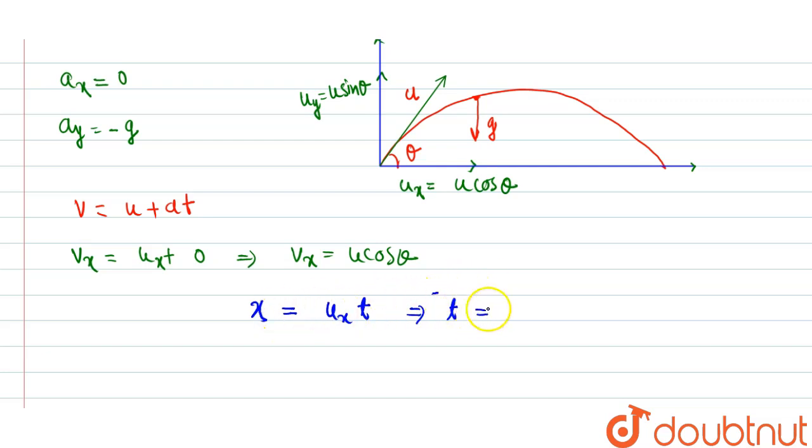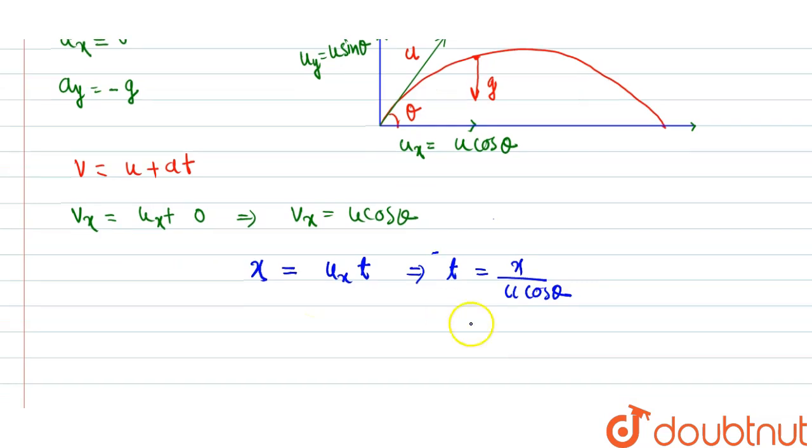From here we can say that time t to cover the horizontal distance or displacement is t equals x divided by ux, that is u cos theta, because ux and vx are same here. So from here we get time to travel the displacement x.